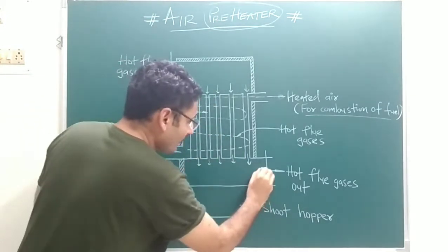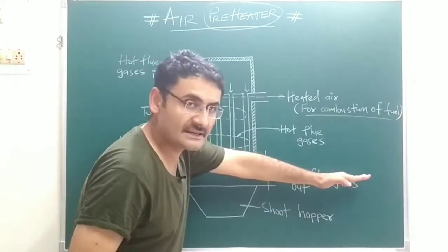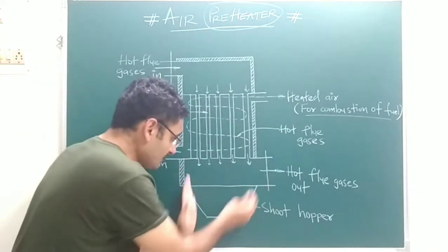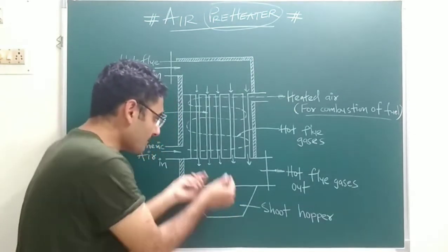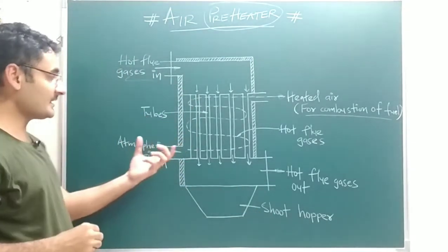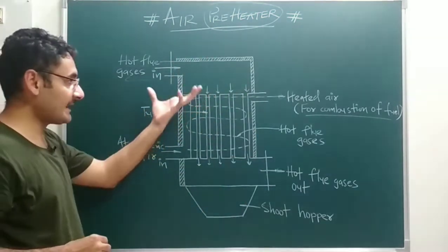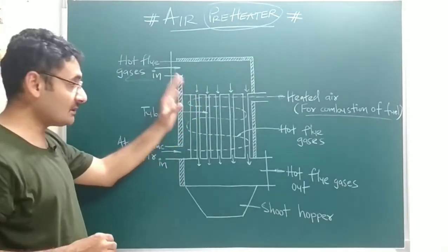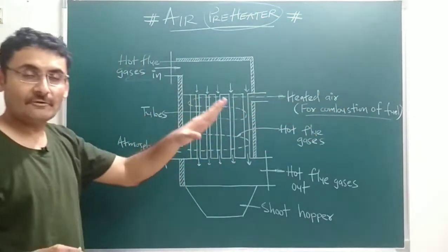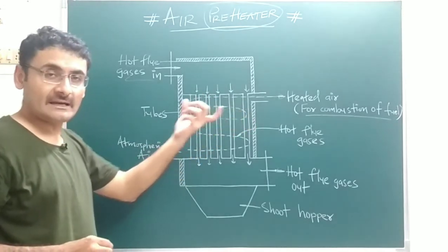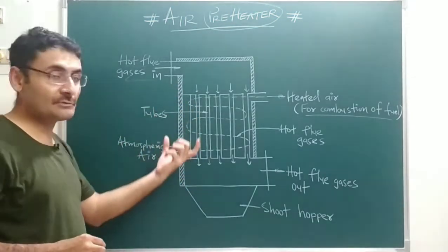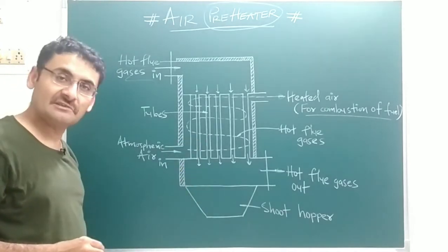From the bottom side, whatever hot flue gases were taken into the air preheater are rejected into the chimney, and the chimney rejects them into the atmosphere. Below the air preheater, a soot hopper collects whatever burnt particles are present in the hot flue gases. So the air preheater uses the waste heat of the hot flue gases to heat the atmospheric air. This heated air increases the rate of evaporation of water and the rate of combustion, fuel is saved, and the efficiency of the boiler is increased.